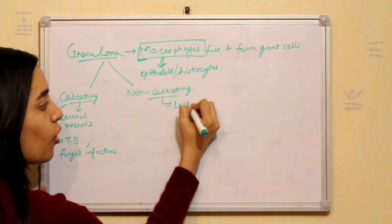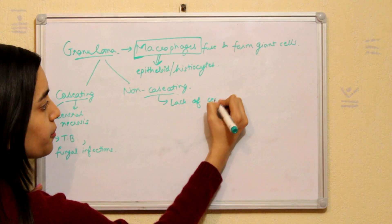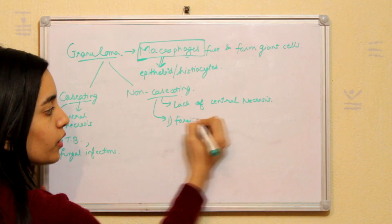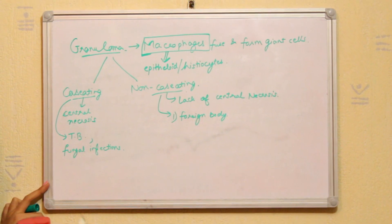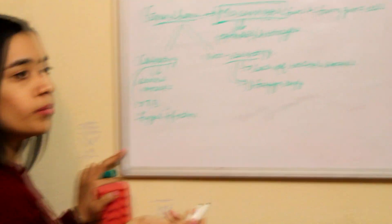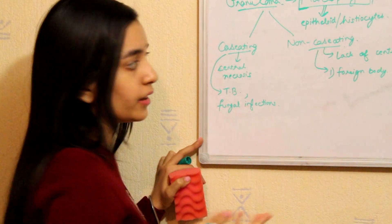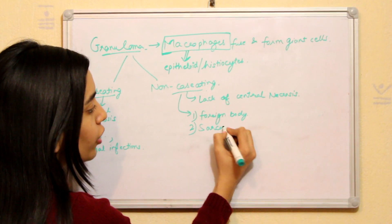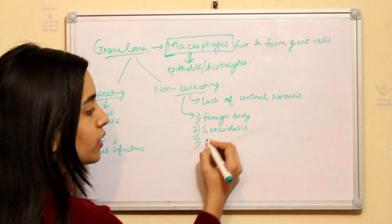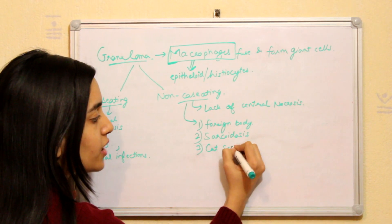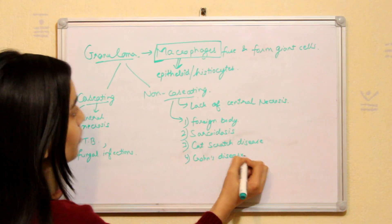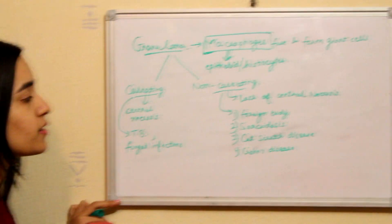Whereas in non-caseating granuloma, there is lack of central necrosis and it can occur in response to foreign body or foreign material that is present in the body but the body is not able to eliminate it. Or it can be in sarcoidosis, cat scratch disease, or in Crohn's disease. There are so many other diseases but these are just the examples.